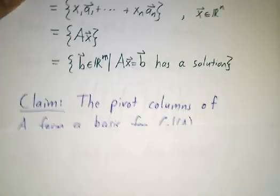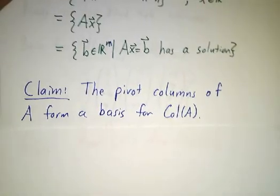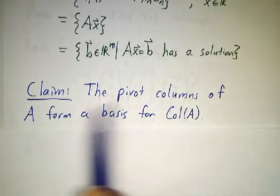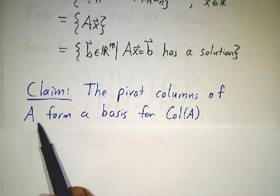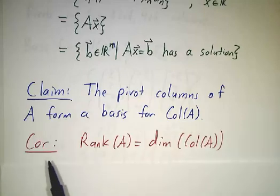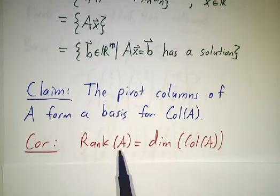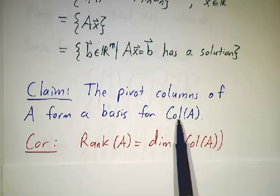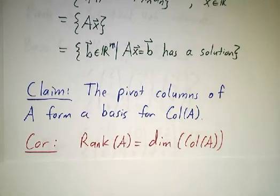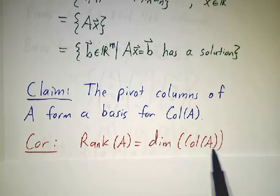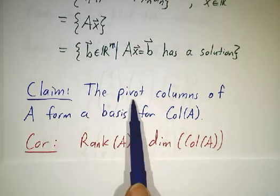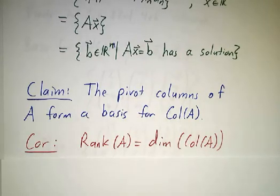The big result is that you can find a basis for the column space by just looking at the pivot columns of the original matrix. If something has three pivots — if the rank is three — then you have a basis with three vectors. In other words, the column space is three-dimensional. So the rank tells you how big the column space is, and if you know where the pivots are, that tells you what the basis actually is.